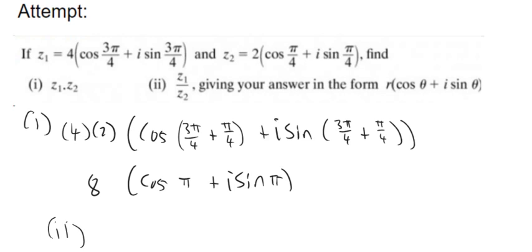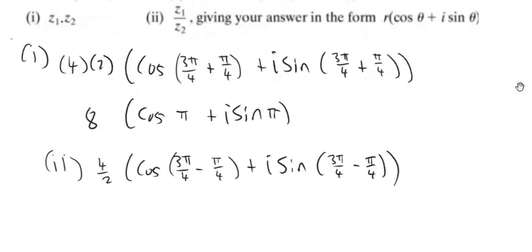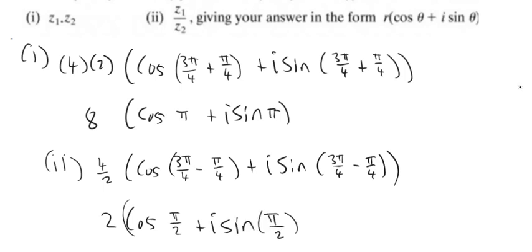Now dividing: they're asking for Z1 divided by Z2. So it's going to be 4 divided by 2 outside, and then cos of 3 pi over 4 minus pi over 4, plus i sine of 3 pi over 4 minus pi over 4. 4 divided by 2 is 2, and 3 pi minus pi is 2 pi, so we get 2 pi over 4, which is the same as pi over 2. So the result is 2 times the quantity cos of pi over 2 plus i sine of pi over 2. You could use a calculator if you weren't sure. That's those two numbers divided.